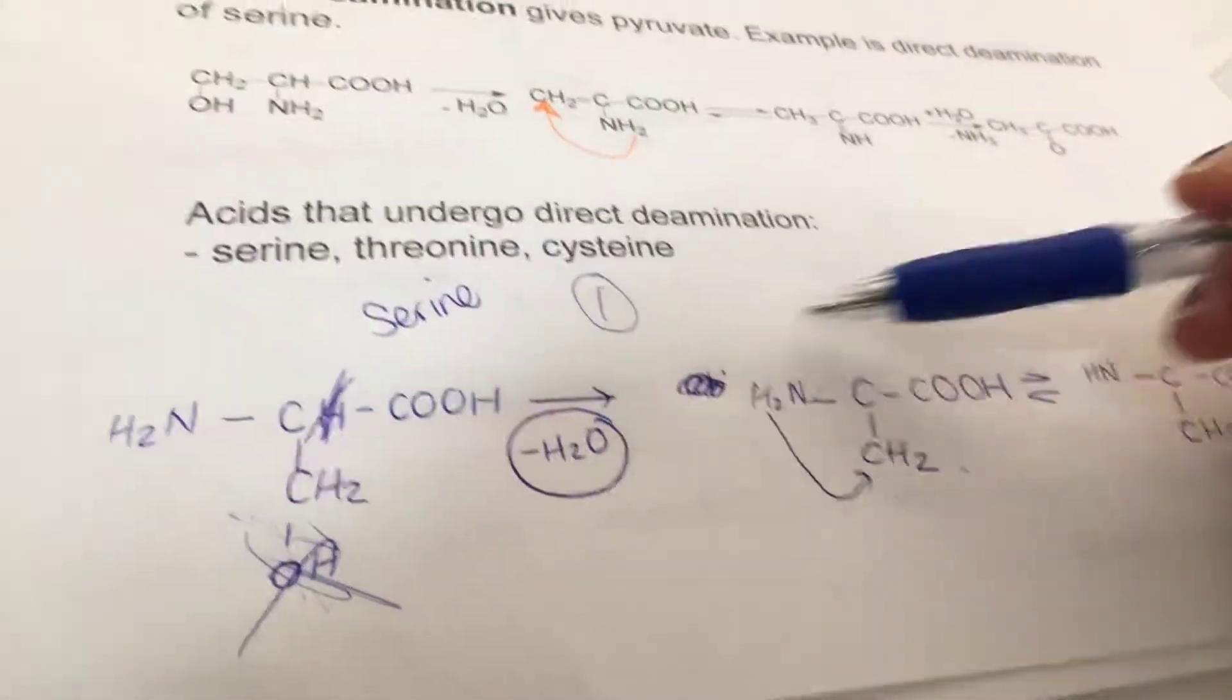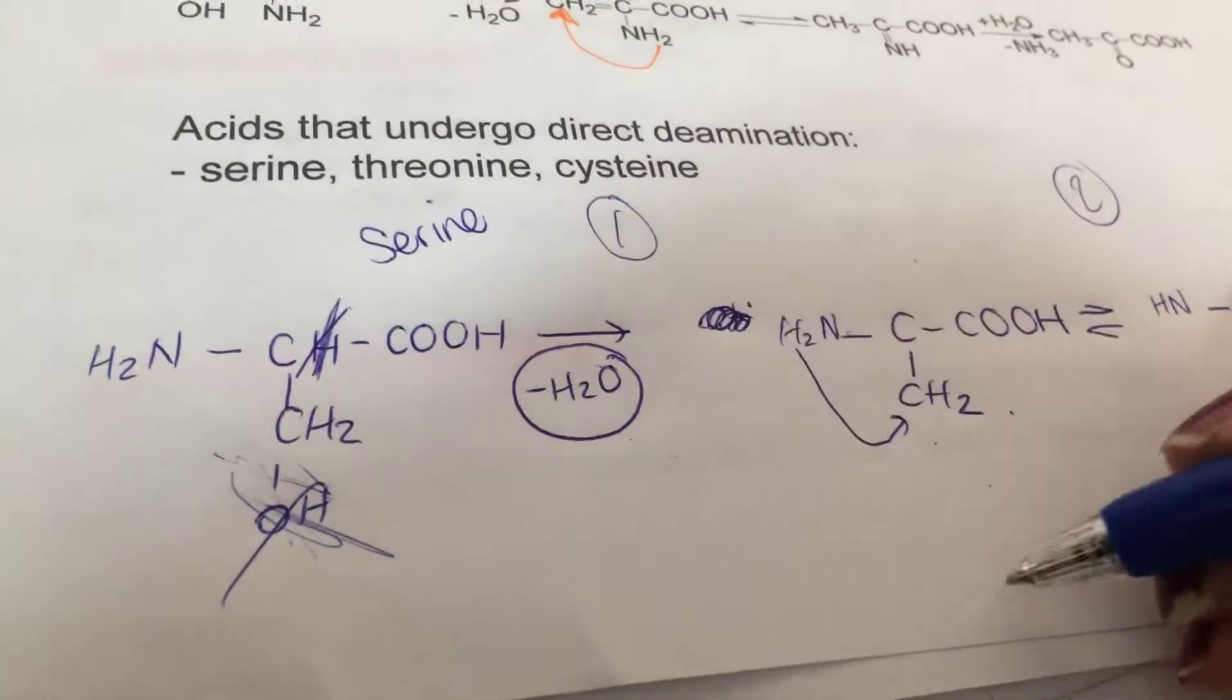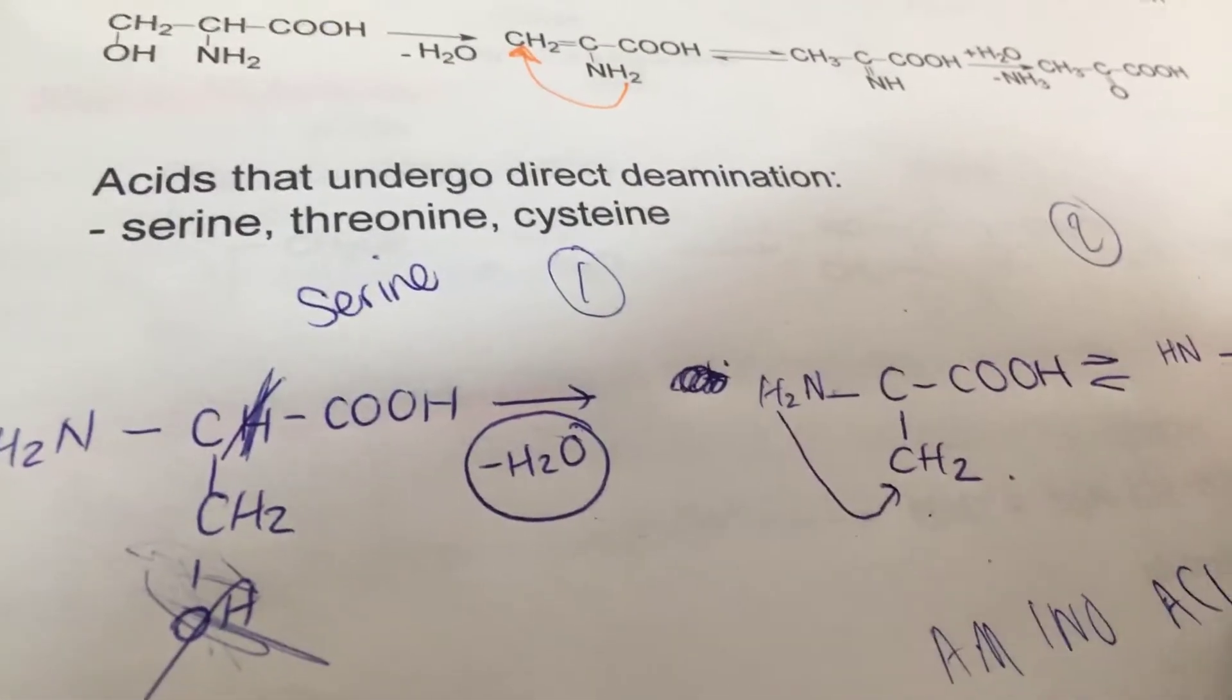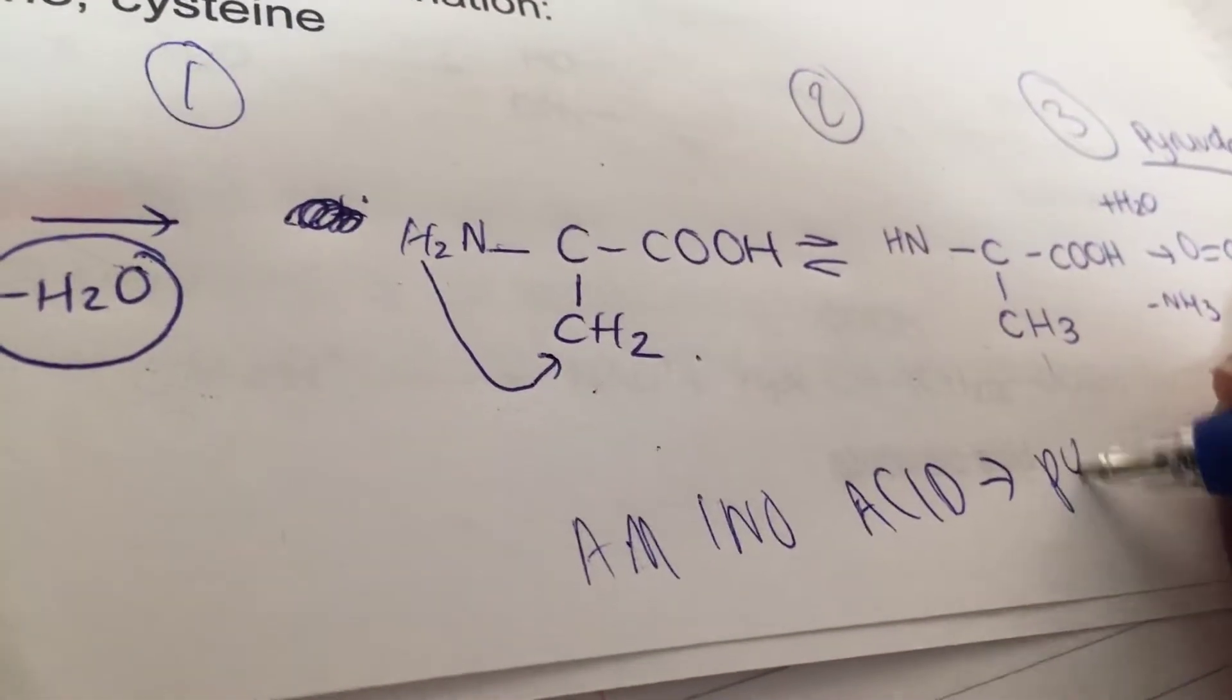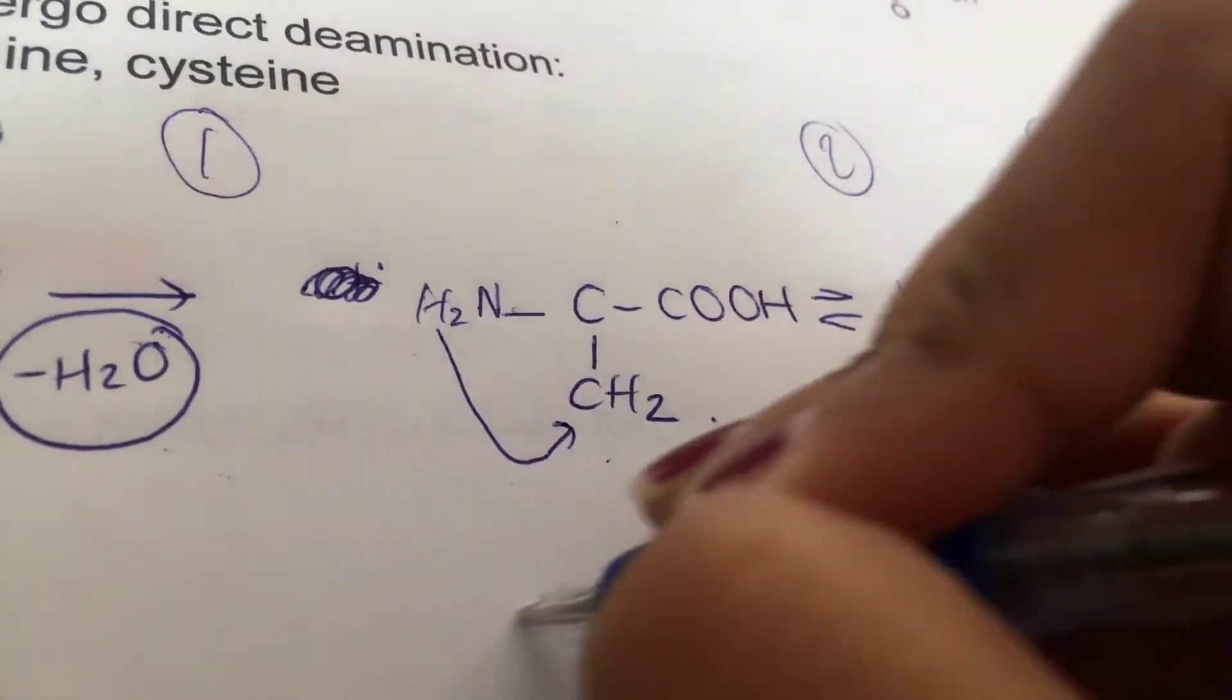Let's quickly go over the process of direct deamination. It's when any amino acid is converted into pyruvate. That's what direct deamination does - any amino acid is converted into pyruvate, which is our precursor.